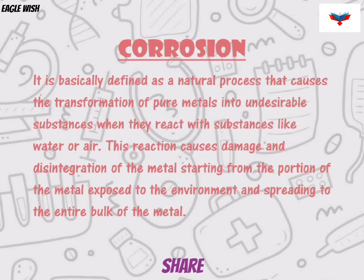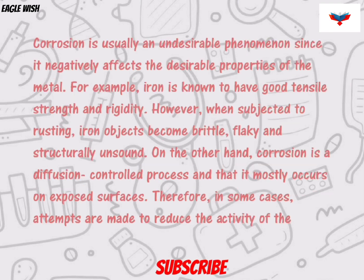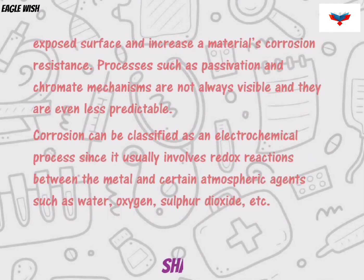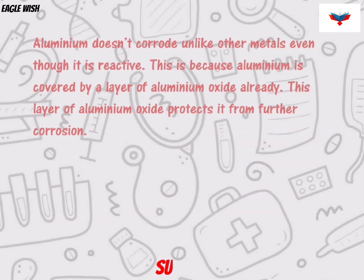Firstly we will write about corrosion. Corrosion is a natural process that causes the transformation of pure metals into undesirable substances when they react with substances like water and air. Corrosion of iron is referred to as rusting. Metals and corrosion: simply defined, the more reactive the metal is, the more easily it gets corroded. Aluminum doesn't get corroded although it is a reactive metal — this is because it is already covered by aluminum oxide.